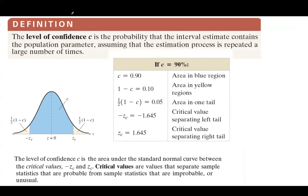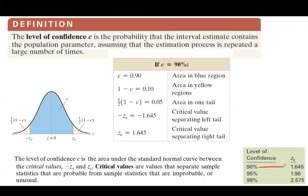With the same process, you can find critical values for different levels of confidence. For a 90% level of confidence, the critical value is 1.645. For 95% level of confidence, it is 1.96. And for 99% level of confidence, it is 2.575.